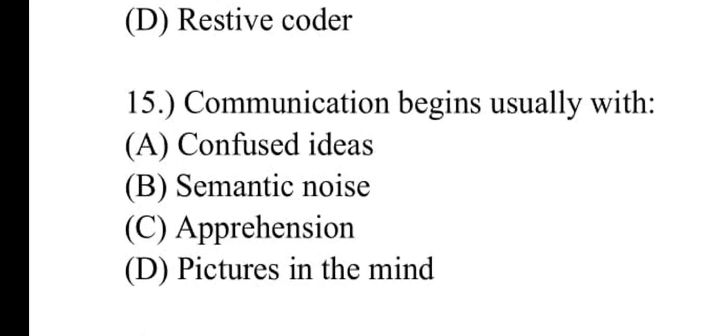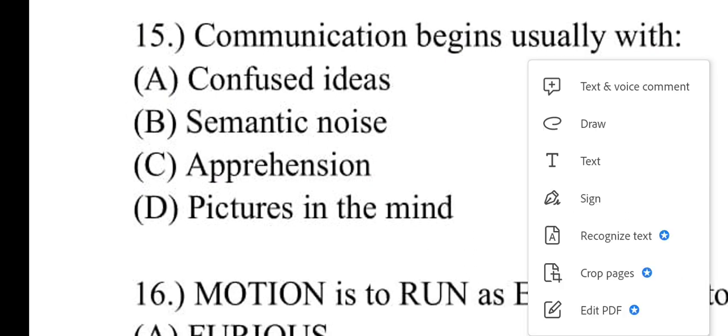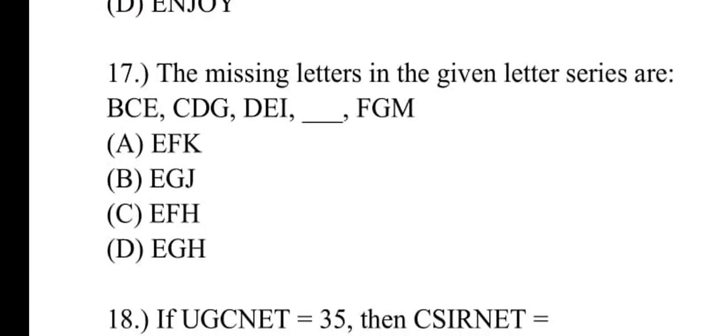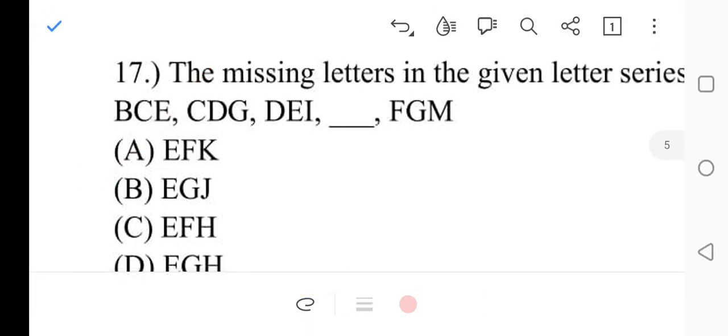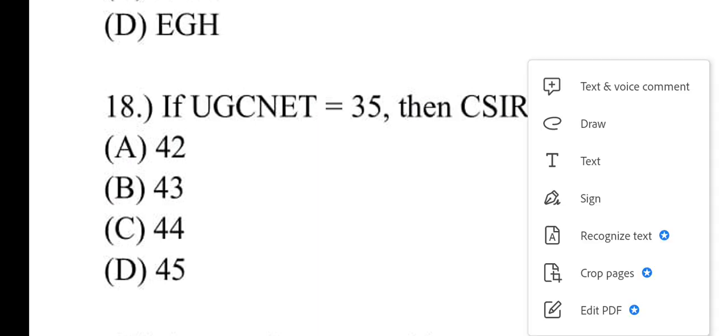Number fifteen: Communication begins usually with what? Options are confused ideas, semantic noise, apprehension, pictures in the mind. Number D will be correct: pictures in the mind. Number sixteen: Motion is to run as emotion is to what? Options are furious, feeling, heart, joy. Number B will be correct: feeling. Number seventeen: The missing letters in the given letter series B-C-E, C-D-G, D-E-I, F-G-M. Number A will be correct: E-F-K. Number eighteen: If UGC NET equals 35, then CSIR NET equals what? Number C will be correct: 44.